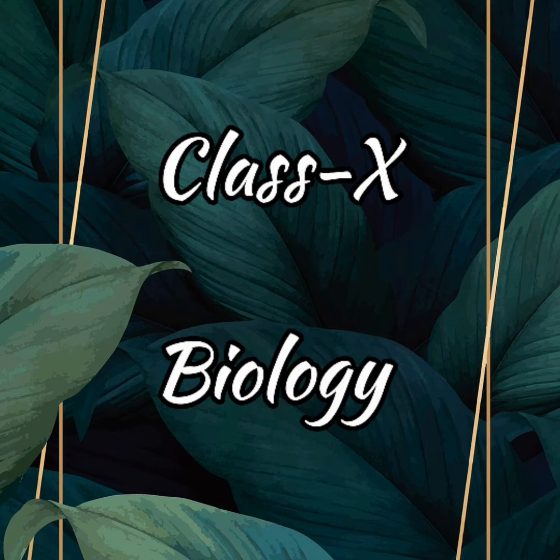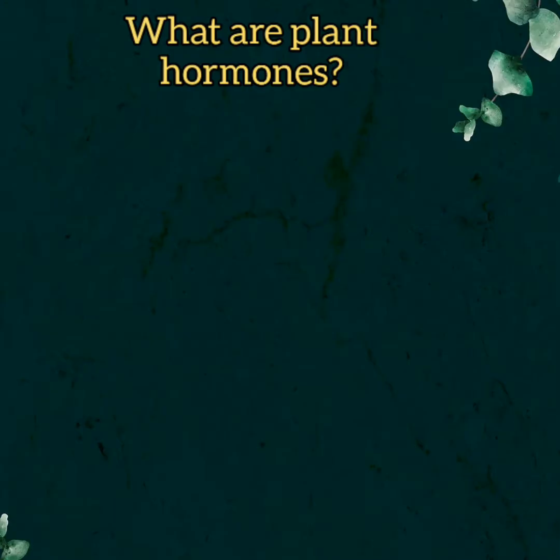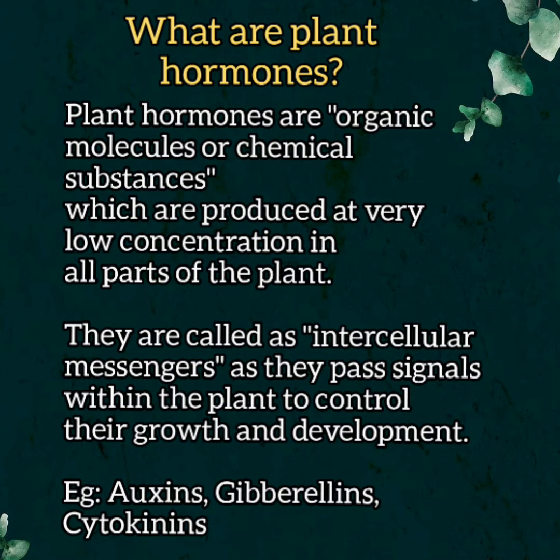Hello everybody, hope you all are doing good. In today's class, we are going to see about the plant hormone called auxin. Before getting into the topic, let's see the definition of what plant hormones are. Plant hormones are organic molecules or chemical substances which are produced at very low concentration in all parts of the plant. They are called intercellular messengers as they pass signals within the plant to control their growth and development.